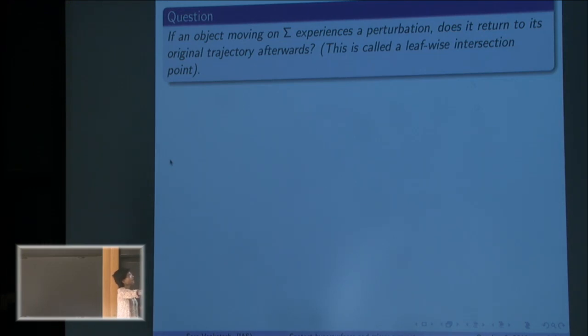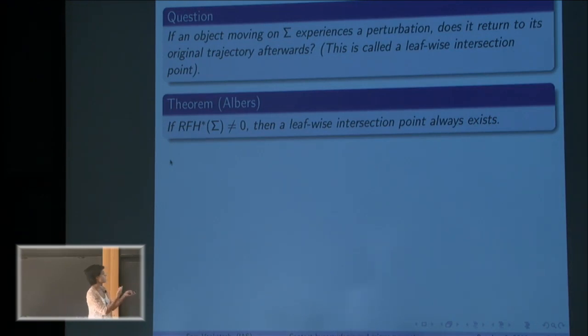This is called a leafwise intersection point. And an amazing thing is that these algebraic invariants I was studying for my original system actually detect these perturbations. So Peter Albers proved a few years ago that if the Rabinowitz Floer homology of my hypersurface is non-vanishing, I always have a leafwise intersection point no matter what perturbation I used.